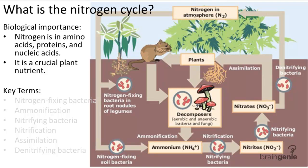We start with the atmosphere, which consists of 80% nitrogen gas. So it is the main reservoir for nitrogen in the form of N2. Nitrogen enters the ecosystem through a type of bacteria called nitrogen-fixing bacteria, which can be found in one of two places.